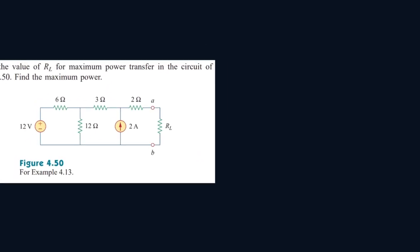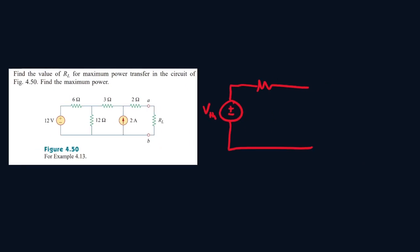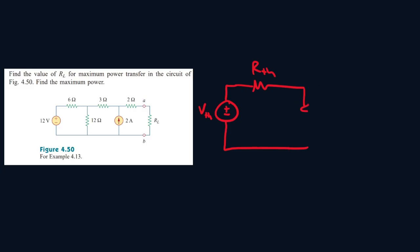To understand what we need to do, let's start by drawing the Thevenin equivalent circuit. So this is obviously V-Thevenin and this is R-Thevenin. Between terminals A and B there is a resistor load. The power at this resistor load will be P in watts, equal to I squared times the resistor itself, which is RL.